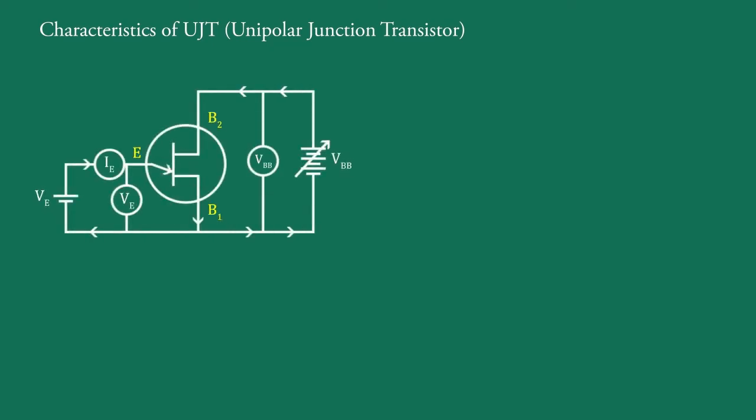Students, in this video we will discuss the characteristics of UJT. This is the circuit diagram for the study of the characteristics of n-channel UJT, in which battery VBB is connected between base B1 and B2. The positive terminal of the battery connects with base B2 and negative terminal of the battery connects with base B1.